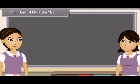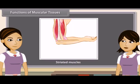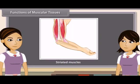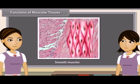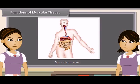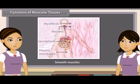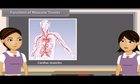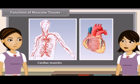Functions of muscular tissues: Striated muscles provide the force for locomotion and all voluntary movements of the body. Smooth muscles are involuntary muscles — they do not work according to our will. Movement of food in the alimentary canal and opening and closing of tubes are due to smooth muscles. Cardiac muscles contract and relax rapidly, rhythmically and tirelessly throughout life. This contraction and relaxation helps heart muscles to pump and distribute blood to various parts of the body.